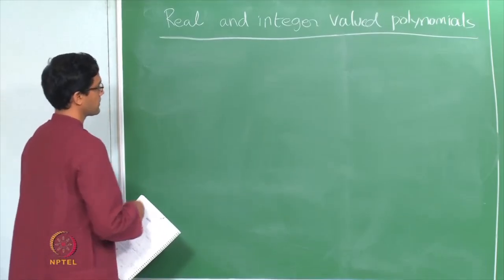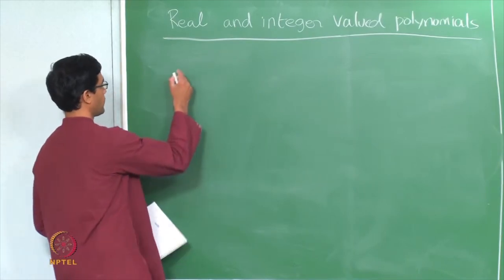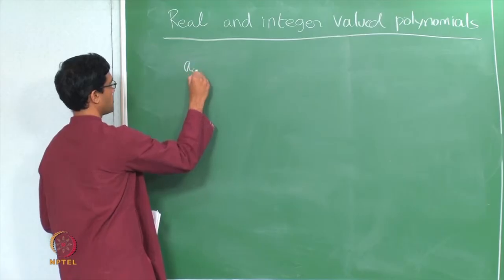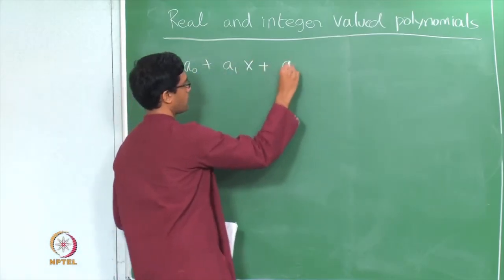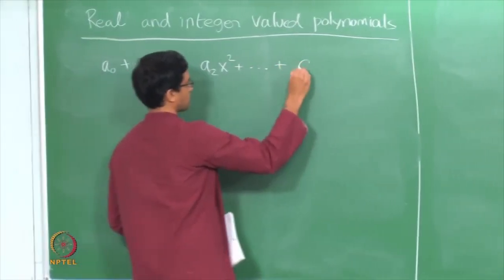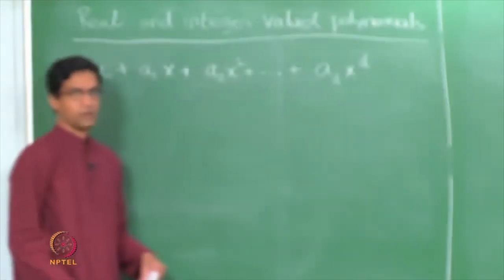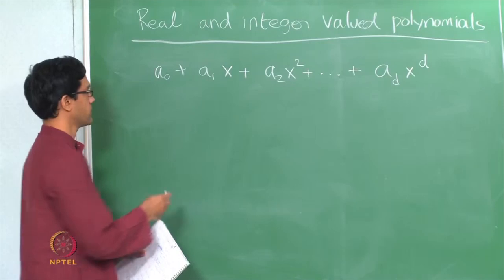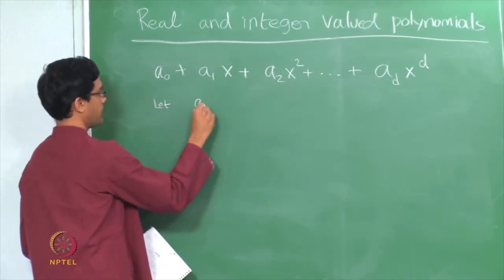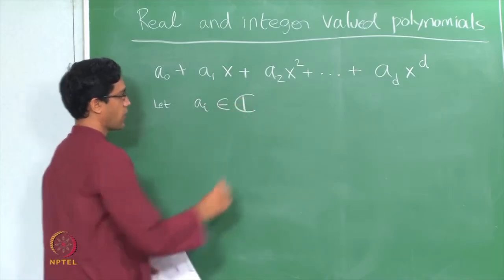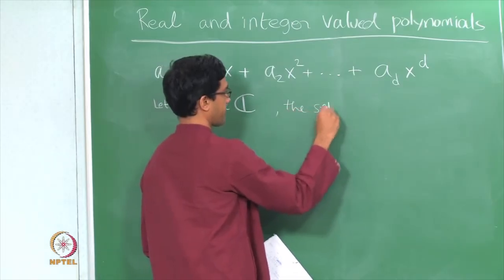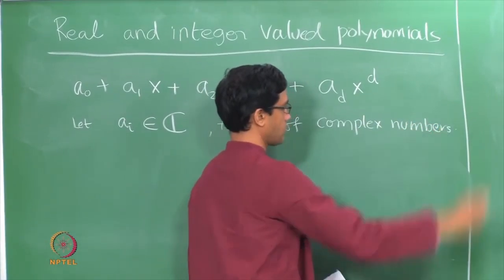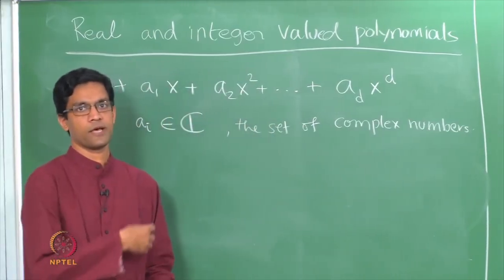Let us begin by considering the most general constants. A polynomial for us is an expression of the form a0 plus a1x plus a2x squared and so on up to x to the power d. The most general thing we could do is to allow the coefficients ai to be complex numbers — ai belongs to C, the set of complex numbers. We will call these complex polynomials.